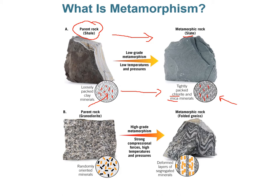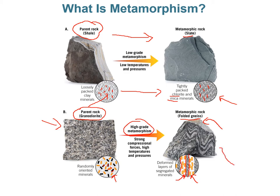A more dramatic form of metamorphism: if you start with a granite-type rock, an intrusive igneous rock with minerals crystallizing randomly from magma, and it undergoes high-grade metamorphism — strong compressional forces with high pressure and high temperature — it metamorphoses into a high-grade metamorphic rock called gneiss. You can see distinct compositional bands: light silicates band together in one layer and dark silicates in another, forming the classic banded foliation of gneiss.